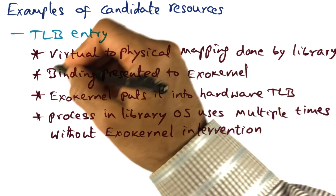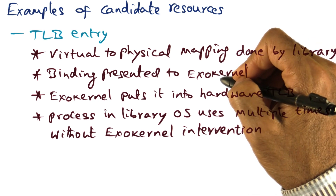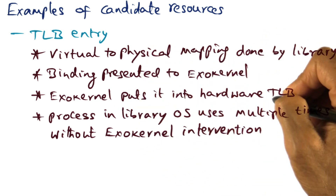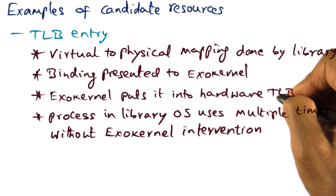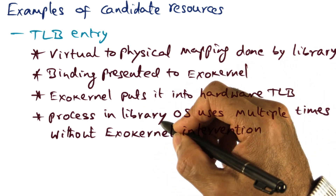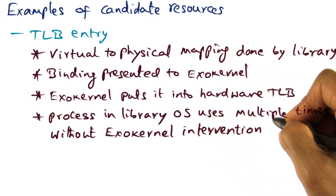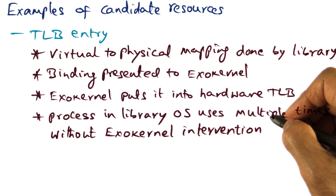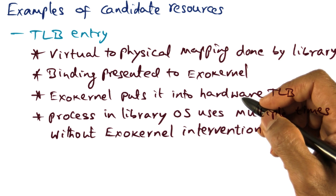So even though putting it into the hardware TLB required the intervention of exo-kernel because we are messing with hardware, once that entry has been put in, that entry is on behalf of this library operating system. And processes of that library operating system, when they are running on the CPU, can access the TLB and do the translation any number of times, because all of that is happening under hardware control and exo-kernel is not in the middle of any of that.